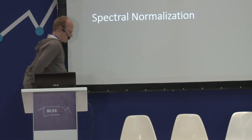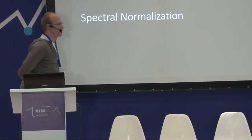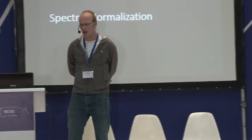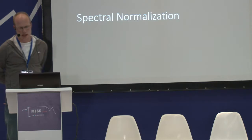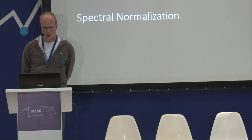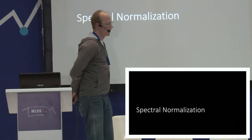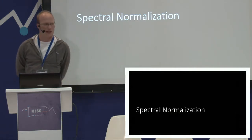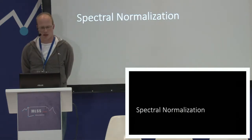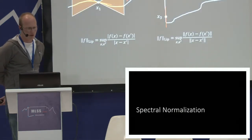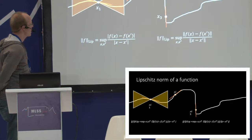Let's talk about spectral normalization. If you remember the last 20 minutes of my previous presentation, they were about different ways to ensure the Lipschitz constraint holds — the Lipschitz norm of the function. Spectral normalization is a particularly elegant way of ensuring that the Lipschitz constraint holds. The first way we had was weight clipping, which is a poor approximation. The second approach was Wasserstein GAN-GP, ensuring it holds at certain sample points. For a differentiable function, the Lipschitz norm is the largest gradient.